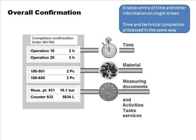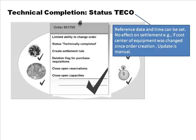When you do a technical completion of the order — called TECO — you have limited ability to change the order. Once an order has the status 'technically complete,' you can still make certain changes but most editing is locked. You can reverse it to make it active again. Permitted changes include: creating a settlement rule if one wasn't already created, and setting the deletion flag for unused purchase requisitions — for example, if you initiated purchase of some material but completed the work without ever needing it.